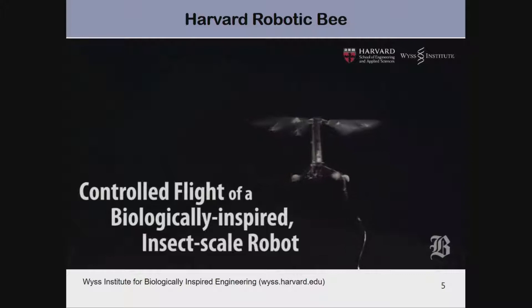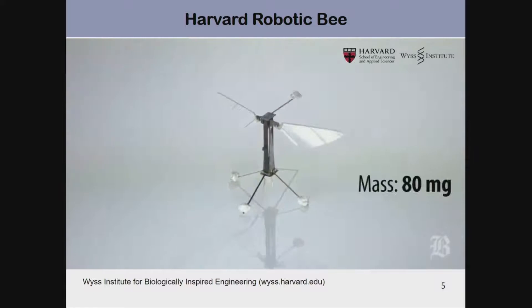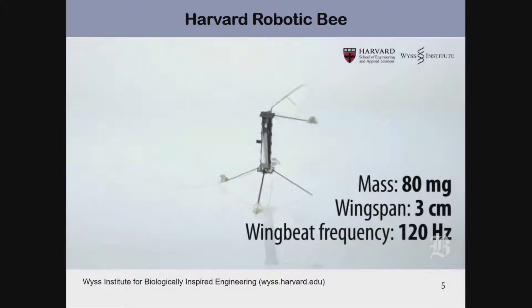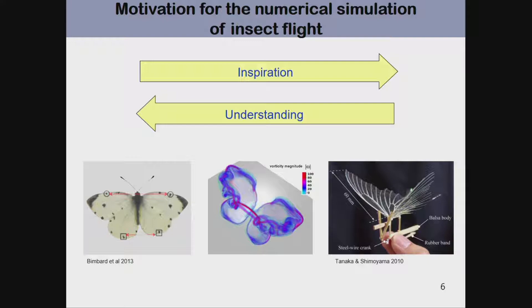On the other hand, with recent progress in material science and micro-robotics, it is now realistic to actually build small flapping robots. This is one of the most successful examples — a Harvard robotic bee about the same size as a real bee that can fly and control its flight by flapping its wings.